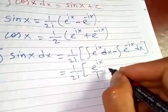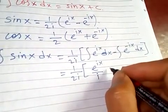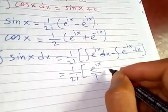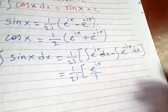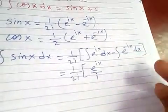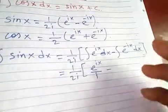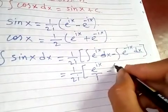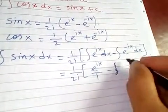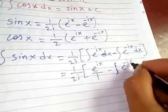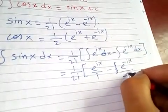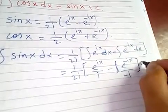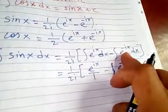Let's neglect the constant for now. And we have minus the integral of e^(-ix) which gives e^(-ix)/(-i). Let's add constant c for both terms.